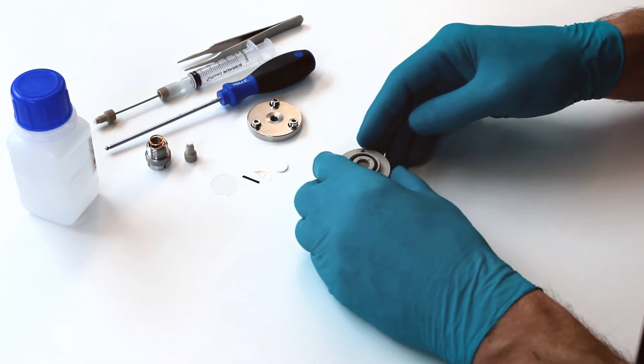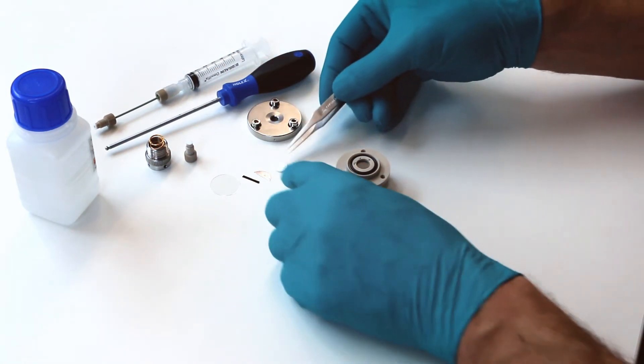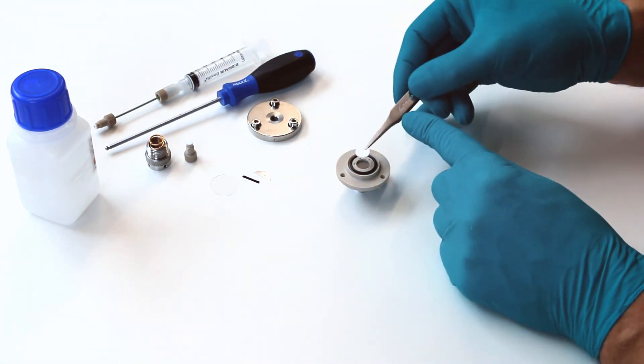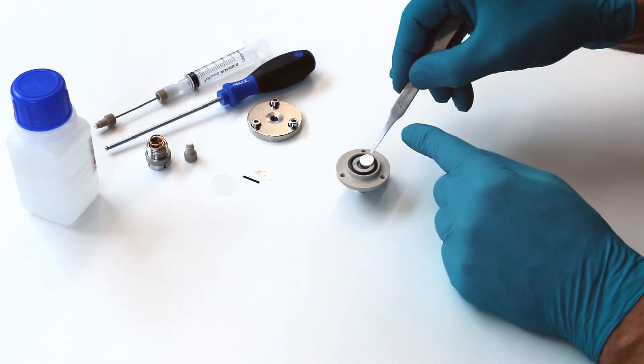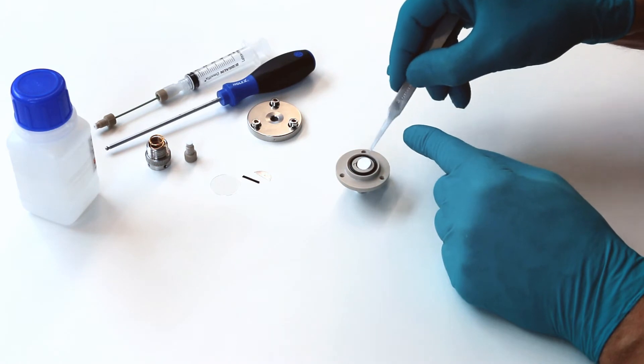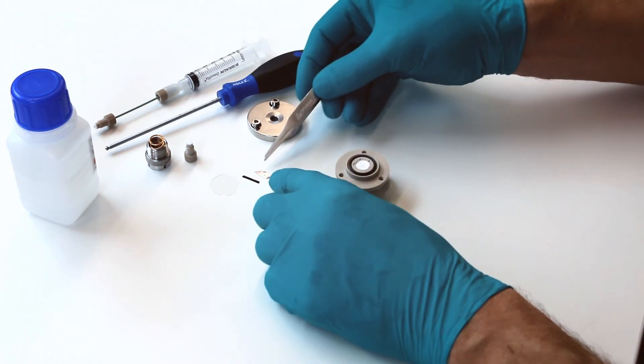Put the assembly onto the desktop. Insert this glass fiber separator, which is 1 mm thick and 10 mm in diameter.